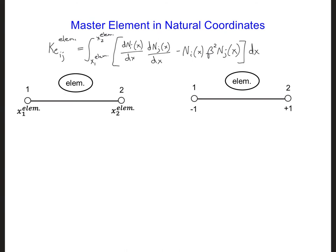On the left here is the element in x coordinates, where the element extends from x1 element to x2 element. And on the right is the element in natural coordinates, psi, extending from minus 1 to positive 1.